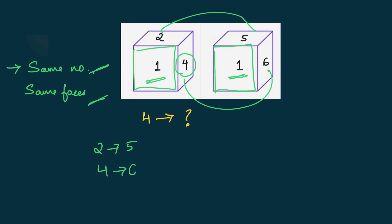From this we can conclude that two is opposite to five, and four is opposite to six. If they asked what is opposite to one — a dice has six faces, and except three, all numbers are accounted for, so obviously the number opposite to one is three. Let's solve a similar problem for more clarity.